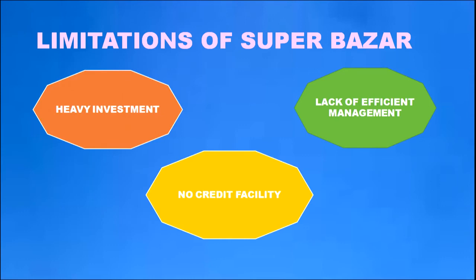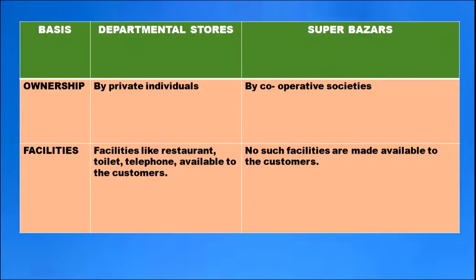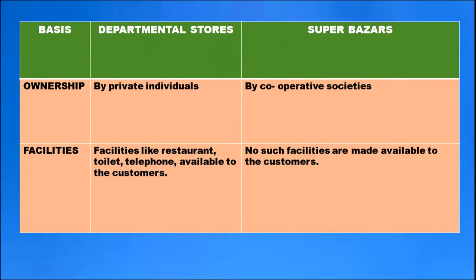Limitations of super bazaars include heavy investment, no credit facility, and lack of efficient management. Comparing departmental stores and super bazaars: departmental stores are owned by private individuals while super bazaars are owned by cooperative societies. Departmental stores provide facilities like restaurants, toilets, and telephones, while no such facilities are available in super bazaars. Generally, prices are higher in departmental stores but goods are sold at a reasonable or cheaper rate in super bazaars.